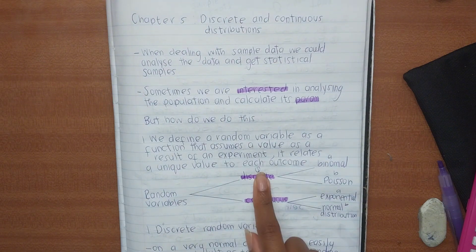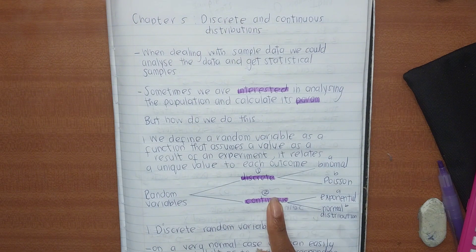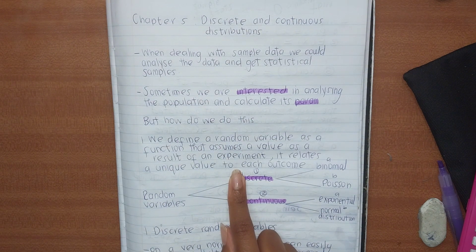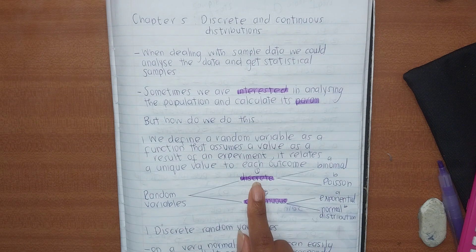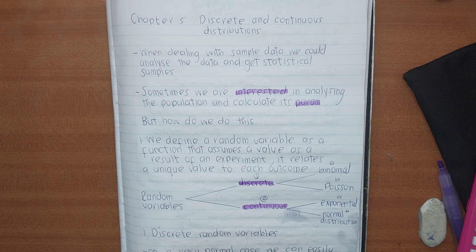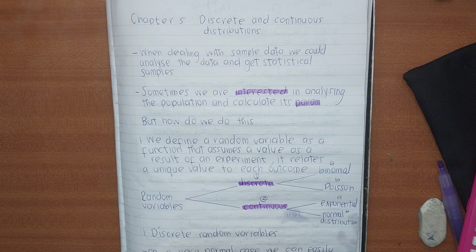So, random variables are functions — discrete uses whole numbers, continuous has decimals. Under discrete, in a very simple case, you have x values assigned to probabilities. When you add the probabilities they give you one, and each probability is between zero and one. In that easy case, to calculate our parameters we can use a probability mass function. But sometimes we do not know the experiment, so we proceed to use distributions — which tells us how the data is spread across the whole population.